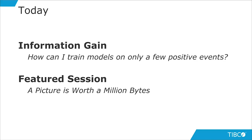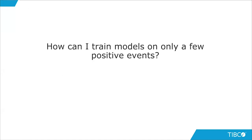Today our Information Gain topic is how to train models on only a few positive events — the rare event issue. You're trying to build a binary classification model but only have very rare positive events. A classic example is fraud detection: most credit card transactions are legitimate, but a small number are fraudulent, and you want to identify them with a predictive model.